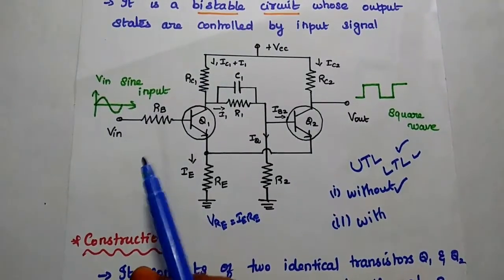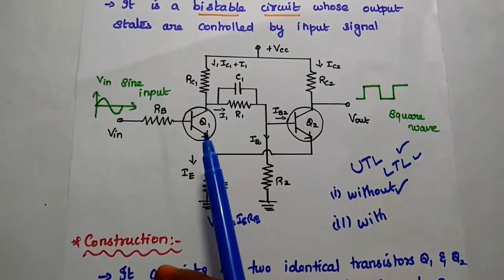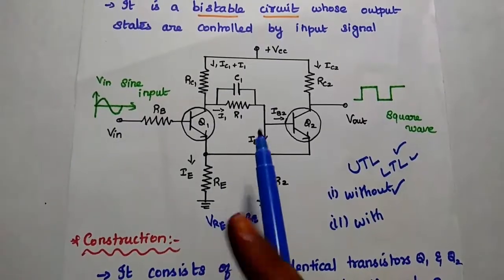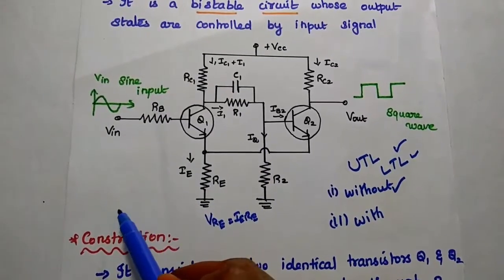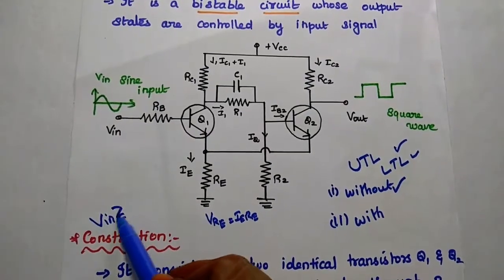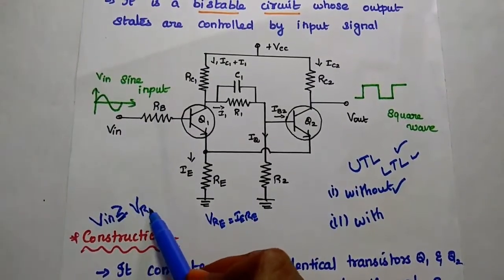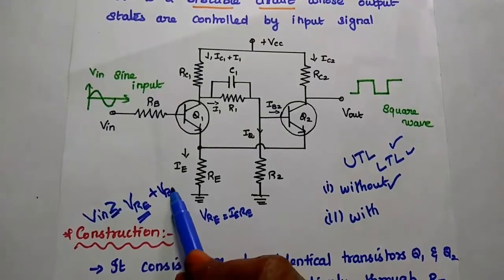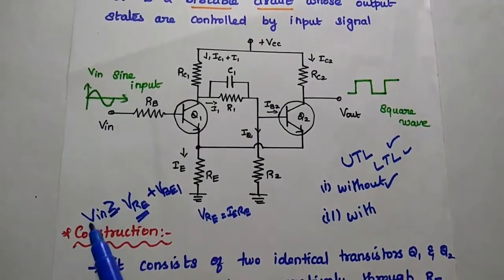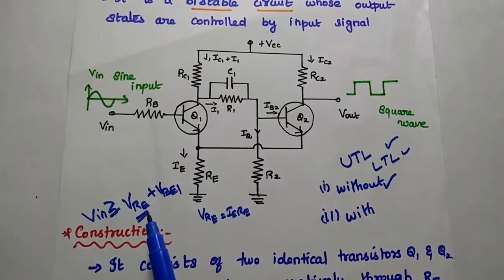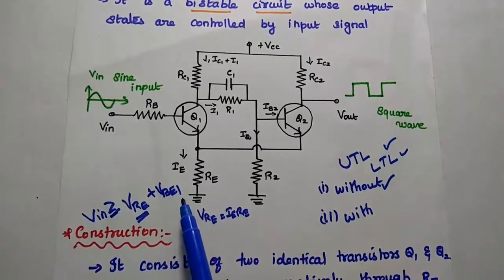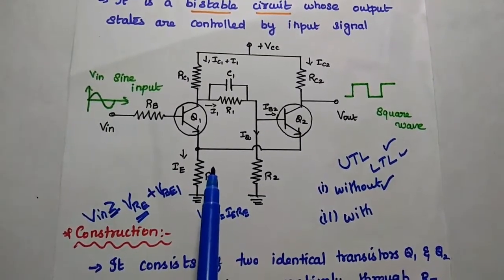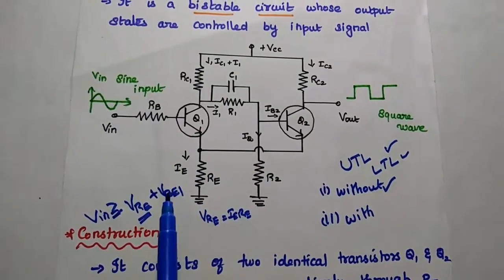When the input is applied to Q1, it remains in the cutoff region until the voltage crosses the upper trigger level. The upper trigger level is the condition where the input voltage is greater than or equal to VRE + VBE. Whenever the input voltage is greater than or equal to this upper trigger level (VRE + VBE1), then Q1 starts conducting. The point at which Q1 starts conducting is known as the upper trigger point (UTP).